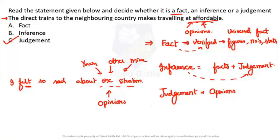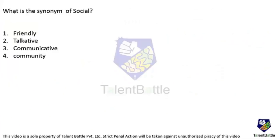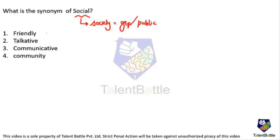The next question: what is the synonym of 'social'? The options are: friendly, talkative, communicative, or community. When we say 'social,' we are referring to a society, which is a group of people — a public. 'Social' doesn't mean you are friendly, talkative, or communicative; it relates to being part of a community. So option four — 'community' — is the answer.